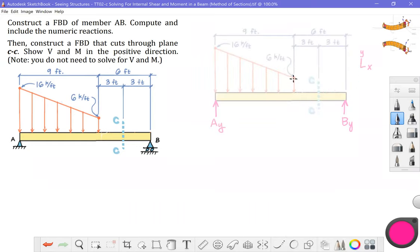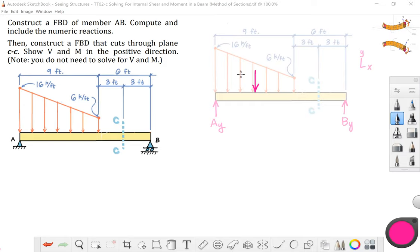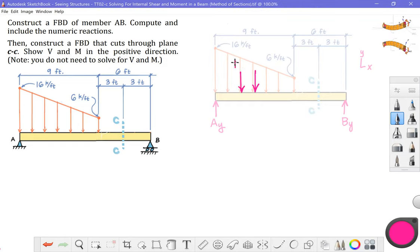I am going to go ahead and dial down the contrast on that one. And what I think I'm going to do is take all of this load in this rectangle. I'm going to turn that into one equivalent force. And all of the load under this triangular part of our trapezoid, I'm going to turn that into a second equivalent force.